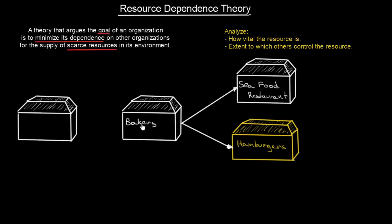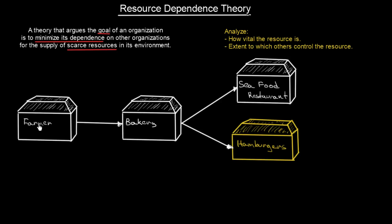The bakery also needs a supplier, and the supplier of the bakery is going to be some special farmer. So here we have a farmer that is supplying the bakery. Now you see the whole chain: first there is a farmer, then there is a bakery, and from the bakery we get bread products — and so does the seafood restaurant.